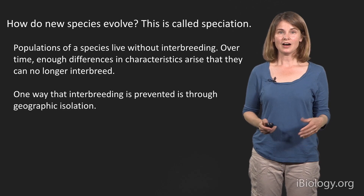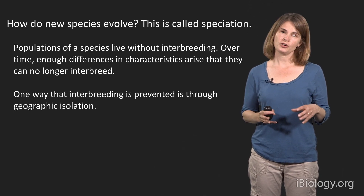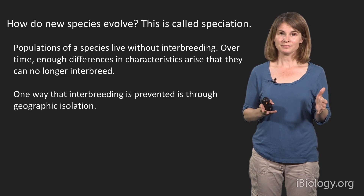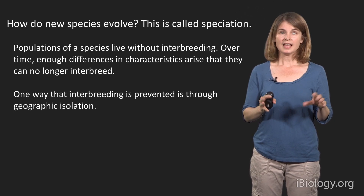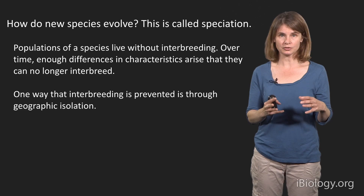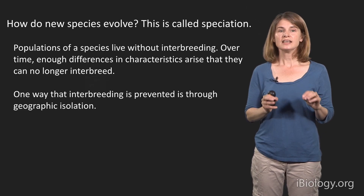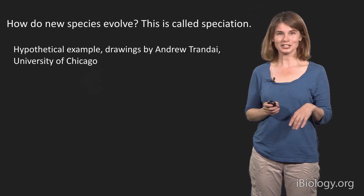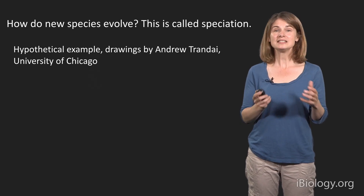So I've shown you several examples of how populations of a species can vary, whether it's peppered moths or bacteria. But how do we go from population-level variation to the evolution of new species? This is called speciation. In general, what happens is that populations of a species become separated and unable to interbreed. If they're separated for a long enough period of time, when they come back together they may not be able to interbreed, and we would call them different species. One of the ways that interbreeding is prevented is through geographic isolation. One of the students in my lab, Andrew Trandy, helped me develop this hypothetical example of what a speciation event might look like.